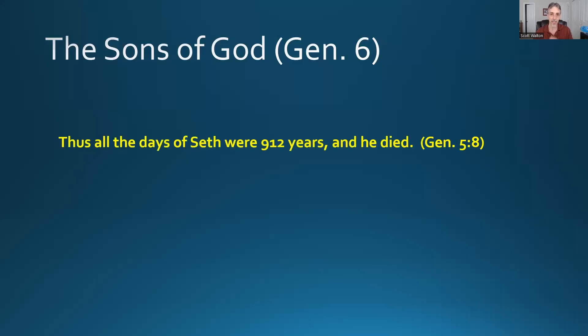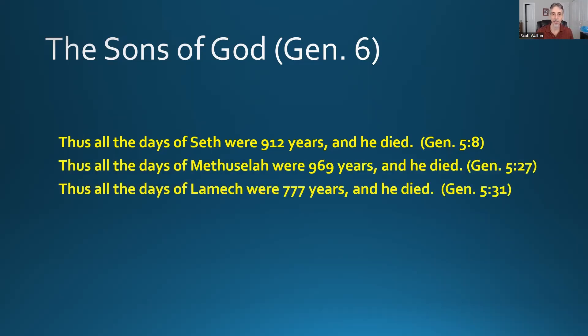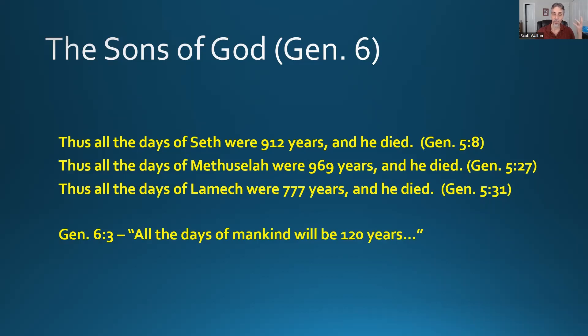This is actually another repeating motif found in Genesis 5 in the genealogies. For each person we read: 'all the days of Seth were 912 years and he died,' 'all the days of Methuselah were 969 years and he died,' 'all the days of Lamech were 777 years and he died.' The pattern is: all the days of X are so many years and he dies. So in Genesis 6, God says of mankind: all the days of mankind will be 120 years — and then what? Then mankind will die in the flood. It's saying the time until the flood is 120 years. This death sentence is declared on mankind as a whole.